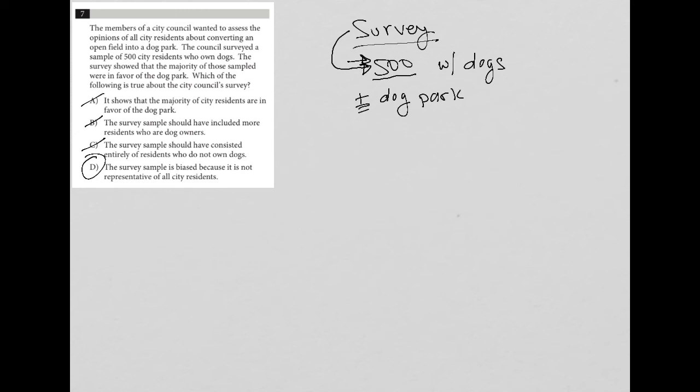And that is that, you know, choosing 500 people is a great number of people, but choosing 500 people who are already dog owners to represent the entire city's beliefs and thoughts regarding having an open field be turned into a dog park is not really representative of the entire city. So the survey definitely is biased because you're only speaking to dog owners. So choice D is the best answer.